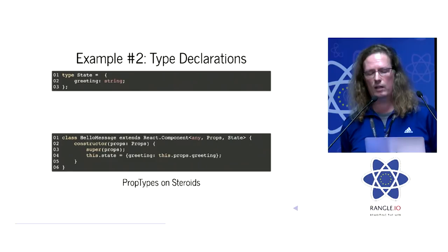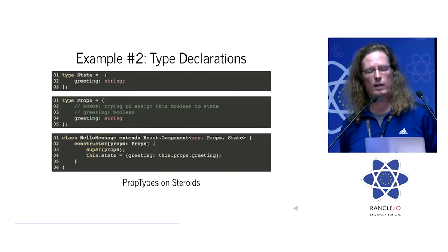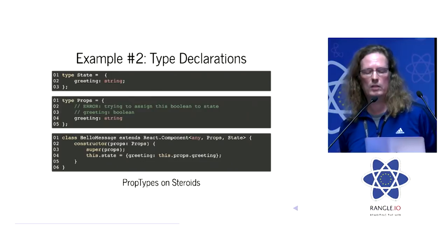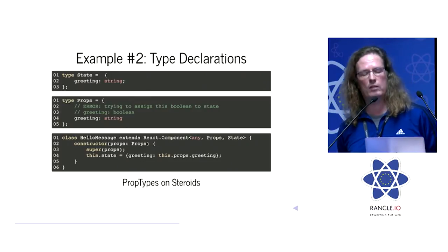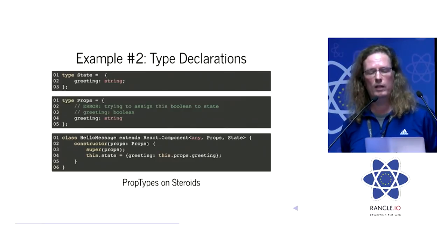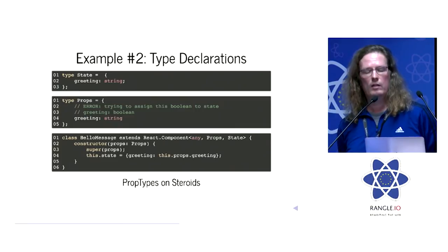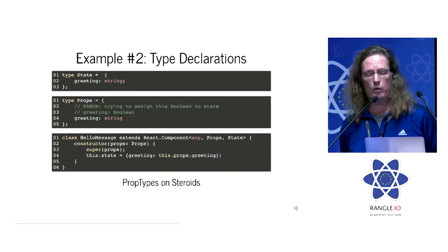As you can see, I'm getting the greeting property from the props and this is how the props look like. I have a greeting field and it's of type string. As I mentioned in the comments there, line two and three, if I had supplied something else like Boolean, Flow would have issued an error there.